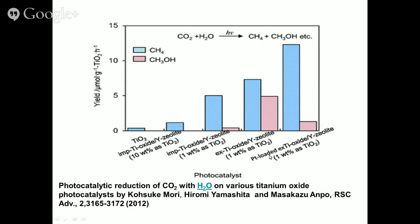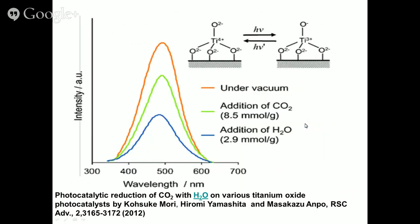If we load platinum on the TiO2 and then load it on zeolite, we get nearly 12 to 13 micromoles per gram of catalyst. In both cases, the methanol formation is considerably higher for the exchange-prepared TiO2 on Y zeolite and for the platinum-loaded TiO2 on Y zeolite. All of this shows that the isolated TiO2 is capable of carrying out this reaction at a higher activity.